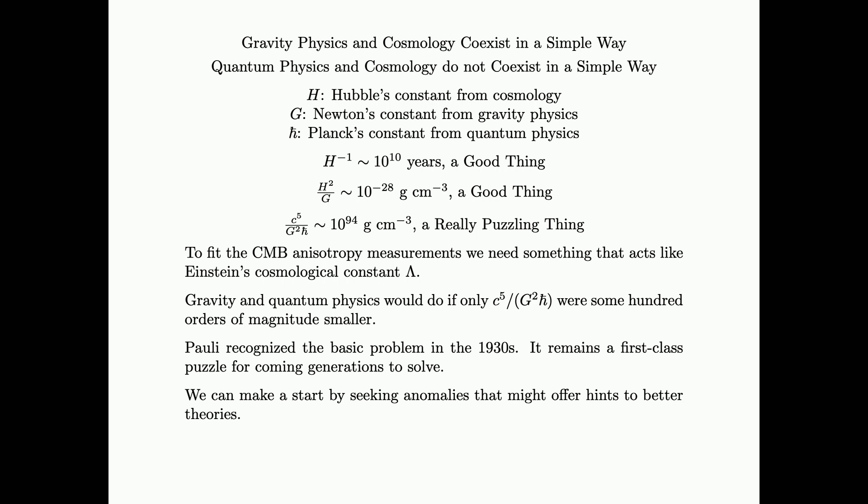Out of Hubble's constant, you get a characteristic time, 10 to the 10th years, which is an interesting number, because that's on order of magnitude, the ages of the oldest stars. The two different considerations, gravity physics, local experiment, and the motions of the galaxies can give you the same age within factors of 10, but 4 pi and so on, is quite striking. And it is a good thing.